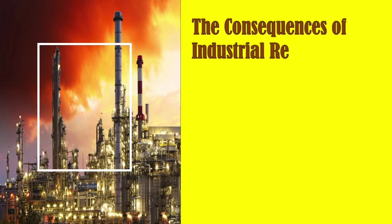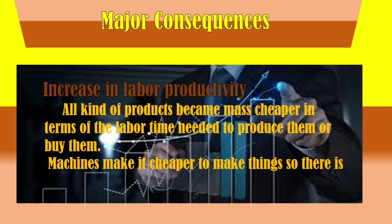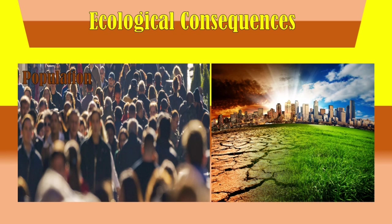Now let's have the consequences of the industrial revolution. Prior to the industrial revolution, which began in Britain in the late 1700s, manufacturing was often done in people's homes using hand tools or basic machines. With the advent of industrialization, it marked a shift to power-driven special-purpose machinery, factories, and mass production of goods. One major consequence is increased labor productivity — all kinds of products became cheaper in terms of labor time needed to produce them, as machines make it cheaper to make things, increasing supply.